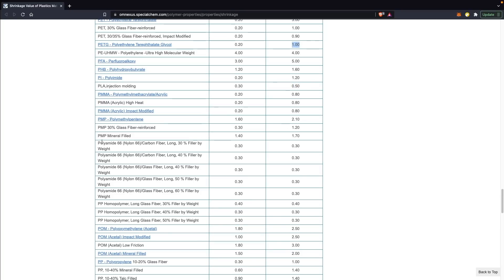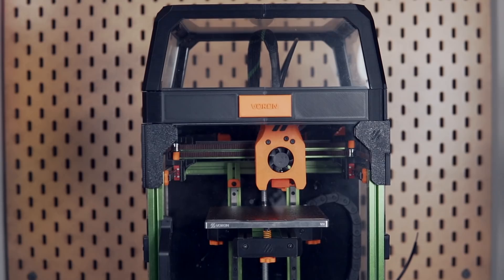ABS has a higher shrinkage rate than PLA, which is one of the reasons it's recommended to print inside of an enclosure. Doing so will allow it to maintain a more uniform heat and have it shrink together versus having it cool section by section as the hot end gets further and further away, which can cause things like splintering or warping. Due to this, I would never recommend printing ABS without an enclosure, but that's exactly what we're going to do today.